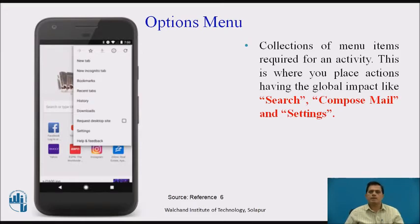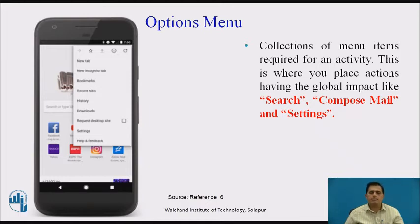This diagram shows the option menu. The option menu is a collection of menu items required for an activity — this is where you place actions with global impact like search, compose, mail and settings. The diagram shows all the menus from which the user can select options.